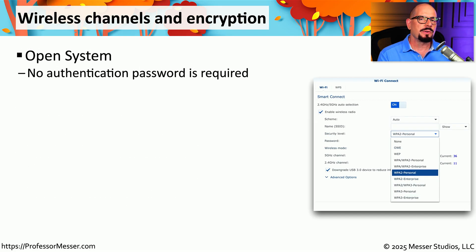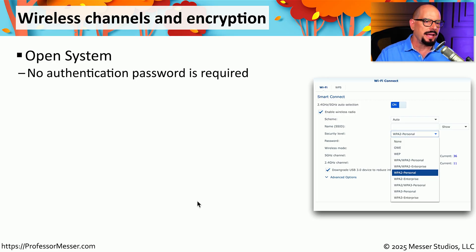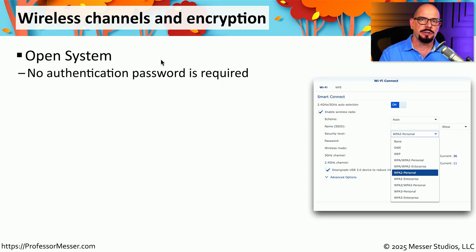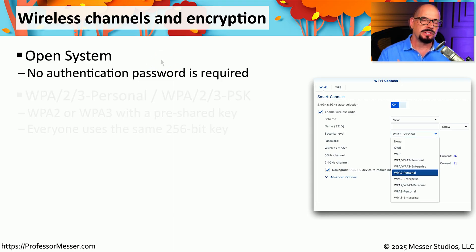There are a number of different ways to provide authentication access to wireless networks. One of them is to simply have an open network — there's no authentication password needed, and anyone nearby can connect. This is the type of network you might see at a coffee shop or when you've checked into a hotel.